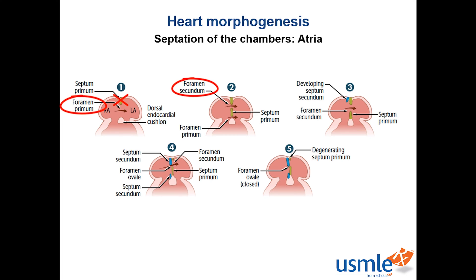As the septum primum is fusing with the endocardial cushion in the atrioventricular canal, a second septum starts to develop called the septum secundum. It develops just to the right of the septum primum and grows from both the superior portion of the atrium and the endocardial cushion. Unlike the septum primum, the septum secundum does not grow all the way down — notice on the fourth image how it's hanging to the right of the septum primum. The way the septum secundum sits over the foramen secundum forms the foramen ovale. The remaining portion of the septum primum will form a valve over the foramen ovale.